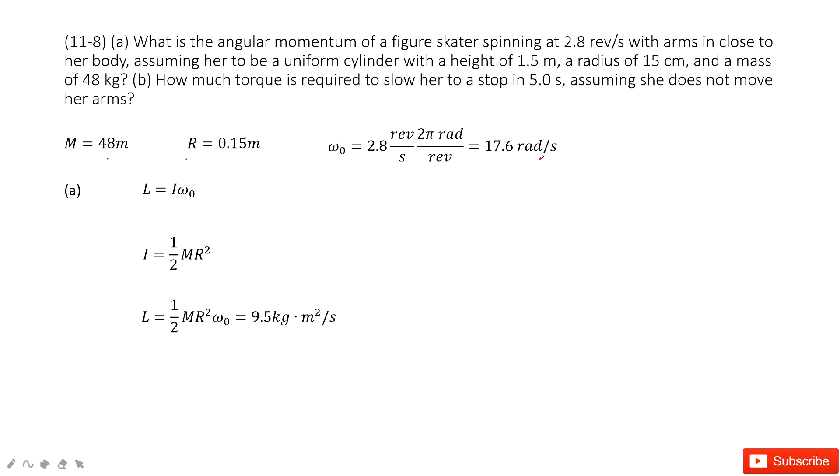The first question, we need to find the angular momentum. For angular momentum, we know it is I times omega naught, and omega naught is given, so we need to find the I. For moment of inertia, for a uniform cylinder, you can check your textbook, it's one half MR squared. Now we input the I inside, we get the function for its angular momentum. Input the number, you get the answer there.